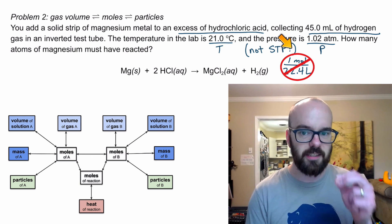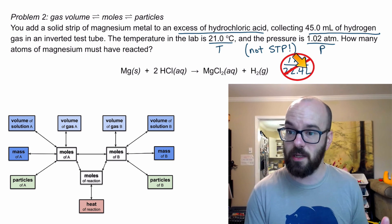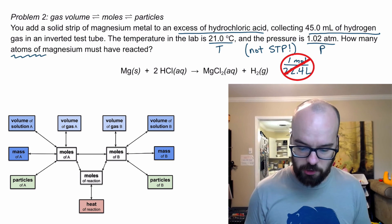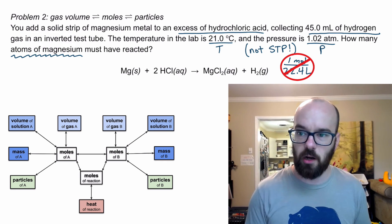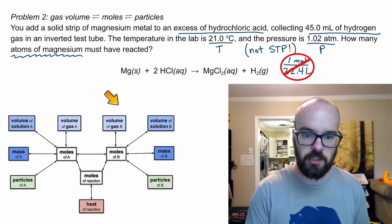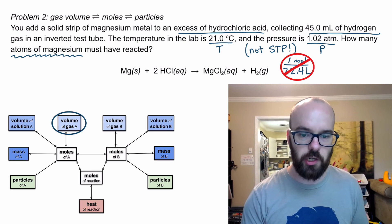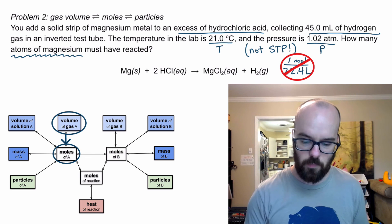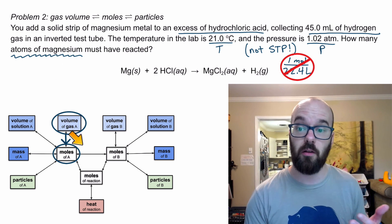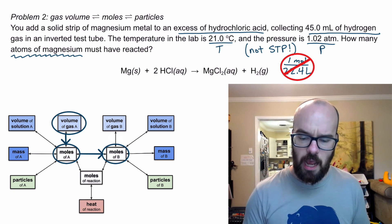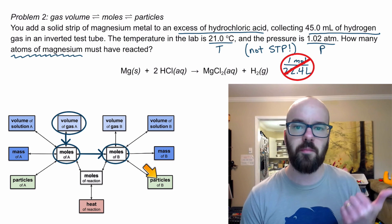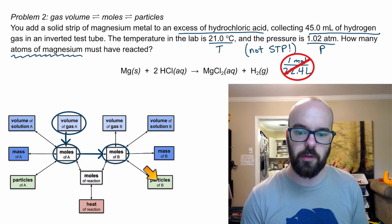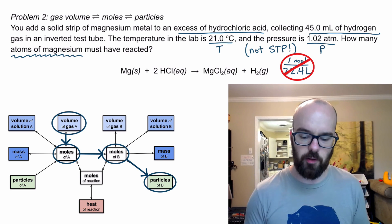If you're at STP, use 22.4 liters per mole. If not, use the ideal gas law. I'm trying to find atoms of magnesium. Looking at the stoichiometry map: start with 45 milliliters, the volume of gas, then convert to moles of that gas. I need to convert from moles of hydrogen to moles of magnesium, then finally use Avogadro's number to get to atoms of magnesium — those are particles. So those are the steps: volume of gas → moles of H₂ → moles of Mg → atoms of Mg.